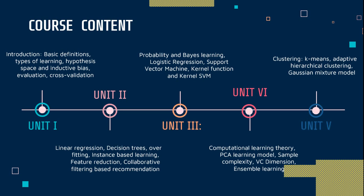Unit number 2 is more specific about supervised machine learning algorithms — for example, linear regression and decision trees. In the decision tree section, we will see origin bias, overfitting, underfitting, instance-based learning, feature reduction, and filter-based recommendations. These are very important algorithms covered in unit number 2.